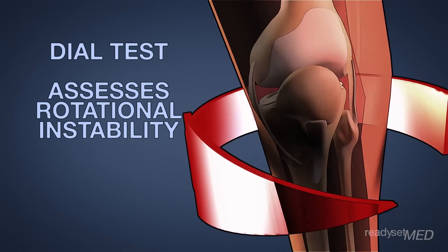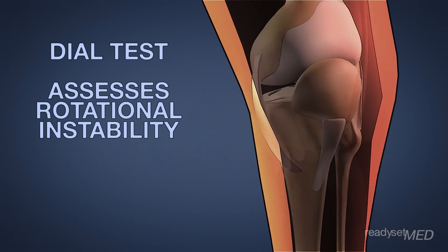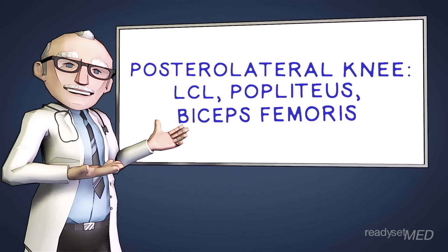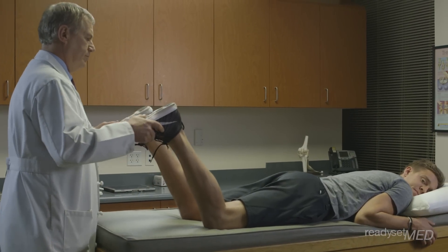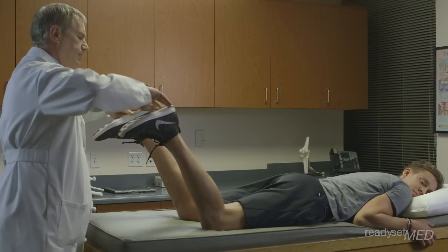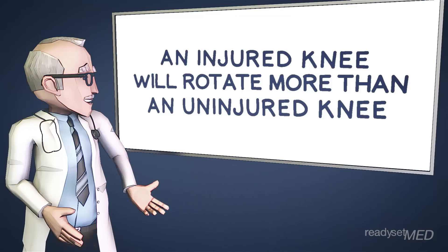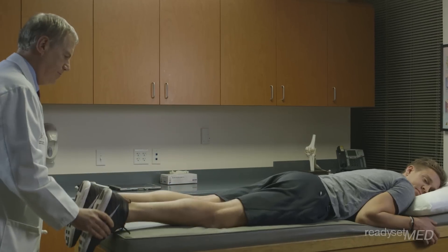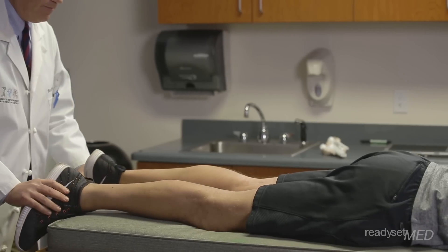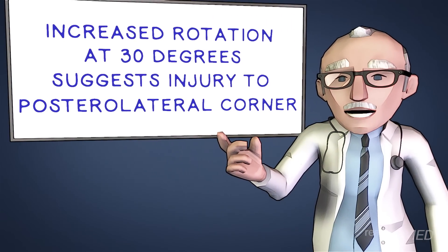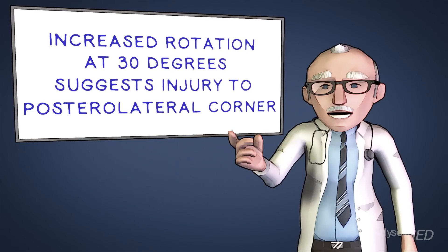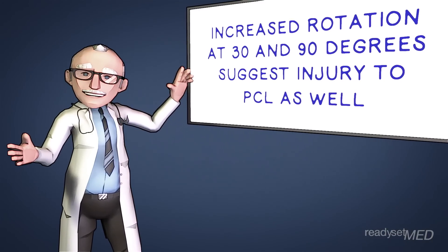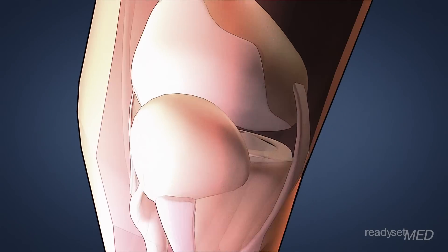The dial test is an exam for rotational instability. The doctor is trying to determine if there has been damage done to the structures that stabilize the posterolateral knee, such as the LCL, popliteus, and biceps femoris. While lying prone, your doctor will hold both legs by the foot or ankle and rotate them externally, comparing them side by side. If the injured knee rotates more than 10 degrees — or significantly more than the opposite knee — it can indicate an injury. If increased external rotation is found at 30 degrees, it suggests an injury to the posterolateral corner. If rotation is increased at both 30 and 90 degrees, it suggests an injury to the PCL as well.